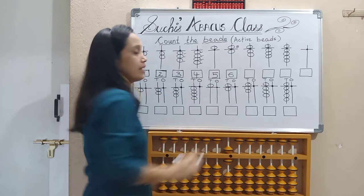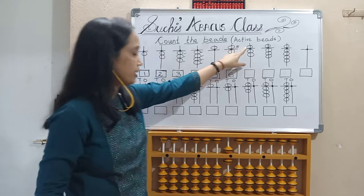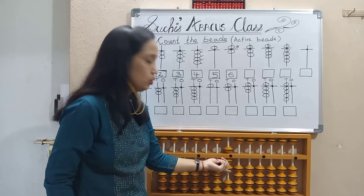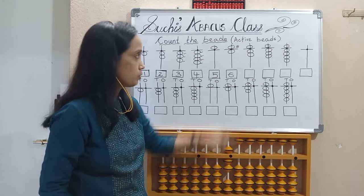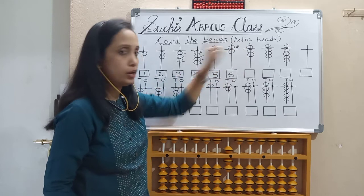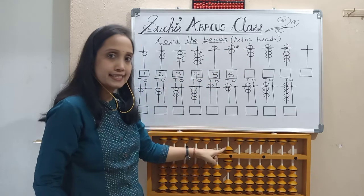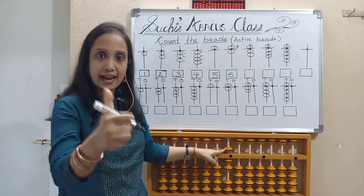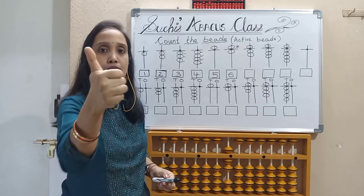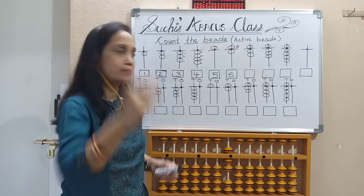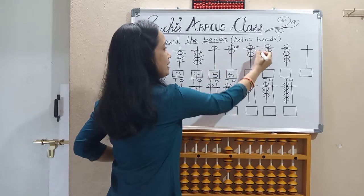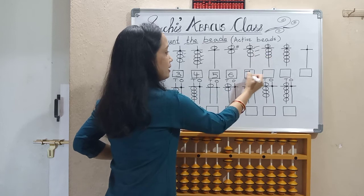Next, here we have 1 upper bead and 2 lower beads. The upper bead is 5, then 6, 7. So the value is 7.